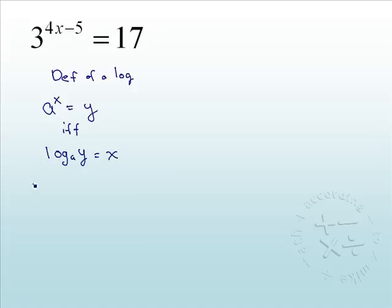we will have log base 3, notice the base of the exponent is the base of the log, so that is the giveaway right there. The argument is 17, that is our y value, equals 4x minus 5.